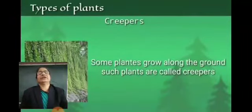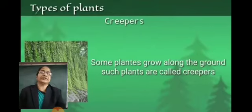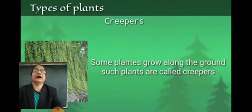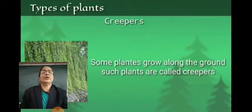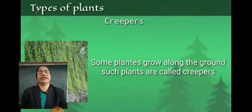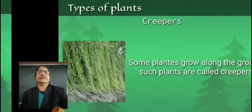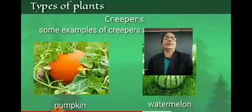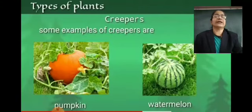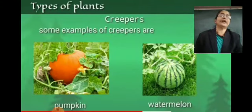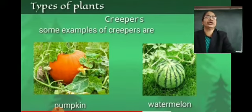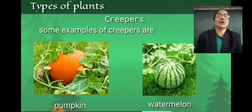Next type of plant is creepers. Some plants grow along the ground. Such plants are called creepers. Examples of creepers are pumpkin and watermelon. They are growing along the ground.